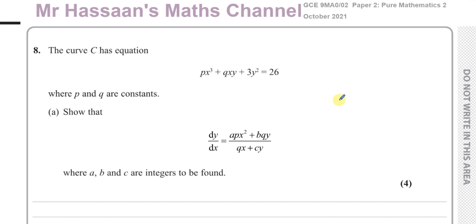And this is called 9MA002. This is like the A-level paper, paper 2 from the A-level, pure maths 2. And this is kind of corresponding to our international A-level syllabus, in P4, to do with implicit differentiation.